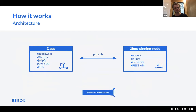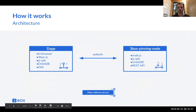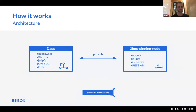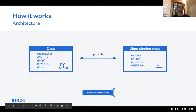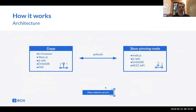Since we're coming from the Ethereum space, the first application 3Box is used for is replacing hex addresses in Ethereum applications with a picture and a name. As we bootstrap this network, we have something called the address server — a mapping from an Ethereum address to a 3Box DID. This is currently centralized, but we're going to fold it into the pinning node and do a lookup using pub/sub, similar to the IPNS pub/sub that recently got into IPFS.